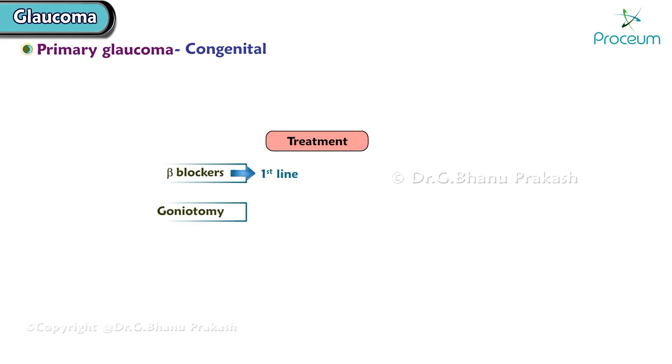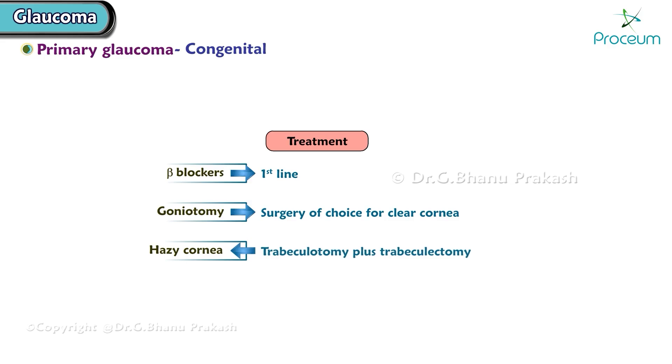Goniotomy is the surgery of choice for clear cornea. Other options for hazy cornea are trabeculotomy plus trabeculectomy.